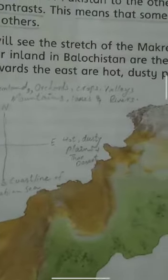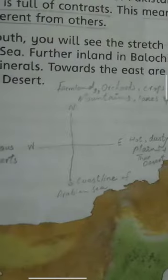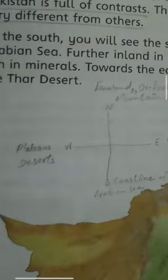In the northern area of Pakistan you can see the farmlands, orchards, crops, valleys, mountains, lakes, waterfalls, and rivers. To the east there are hot and dusty plains plus the desert as well, and if you move towards the west here you can see the coastline of the Arabian Sea.